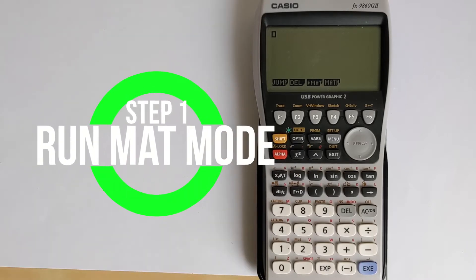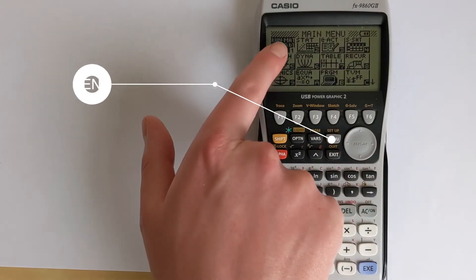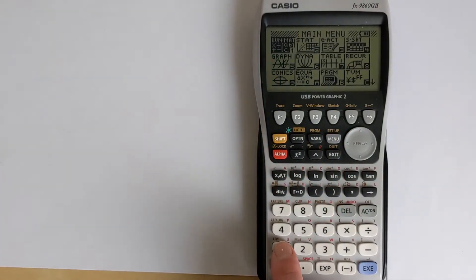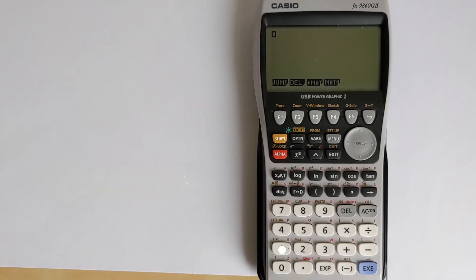Now, before you can solve this problem, you have to make sure your calculator is in the right mode. So press menu and then ensure that it's in the run map mode on option one. That will make sure it behaves as expected.